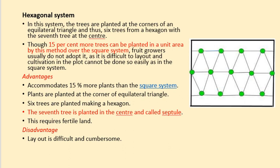Next is the hexagonal system. In this system, trees are planted at the corners of an equilateral triangle, and thus six trees form a hexagon with the seventh tree at the center. Though 15% more trees can be planted in a unit area by this method over the square system, fruit growers usually do not adopt it as it is difficult to lay out and cultivation cannot be done as easily as in the square system. Advantages: accommodates 15% more plants than square system; plants are at corners of an equilateral triangle; six trees make a hexagon; the seventh tree planted in the center is called septula. This requires fertile land. Disadvantage: layout is difficult and cumbersome.